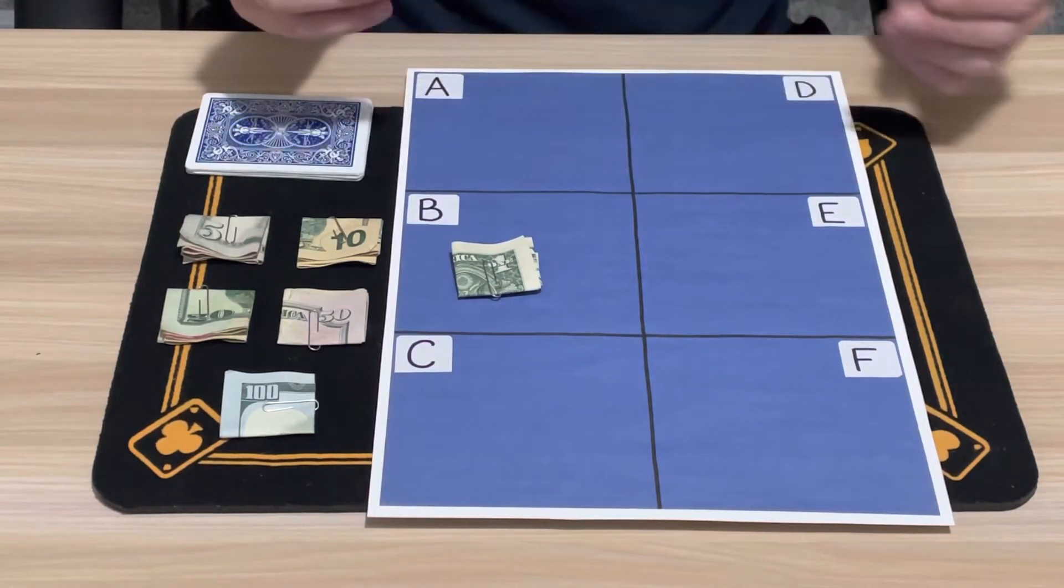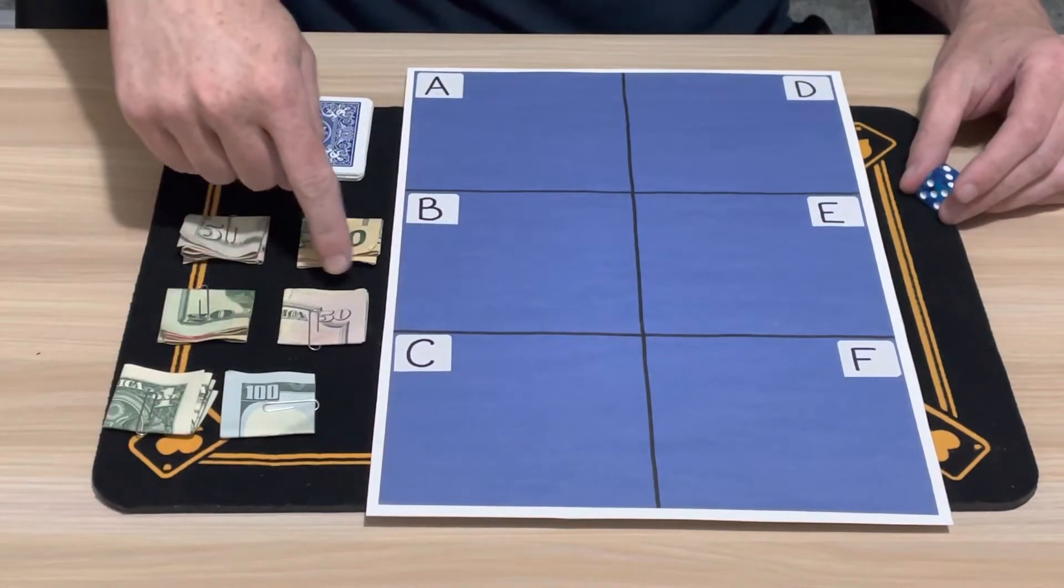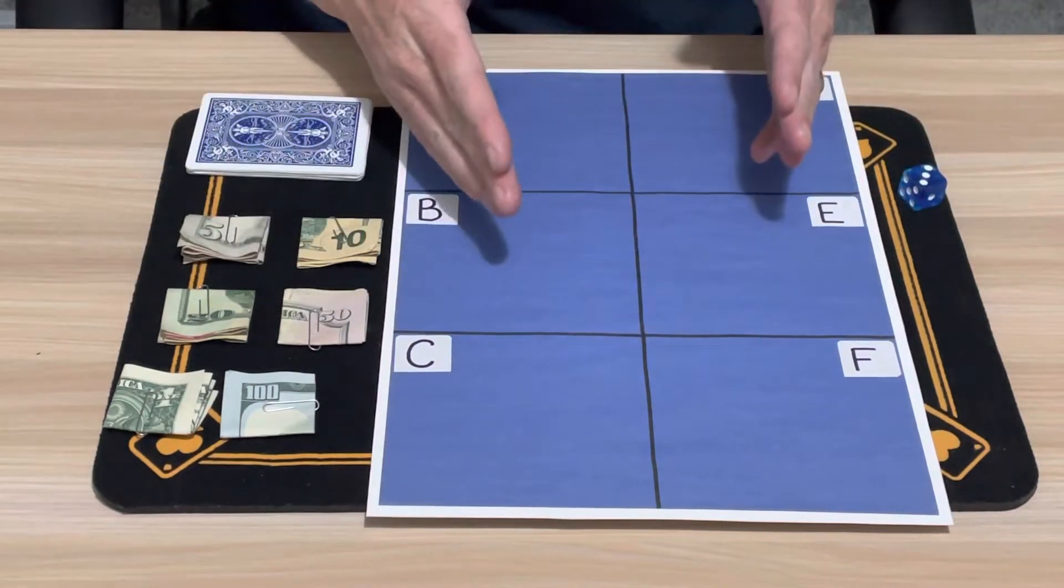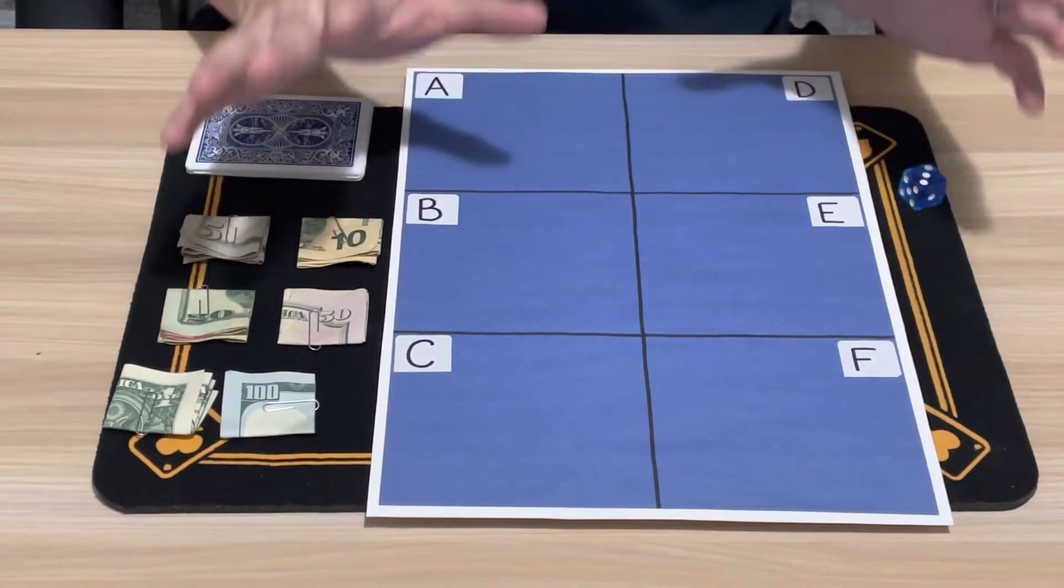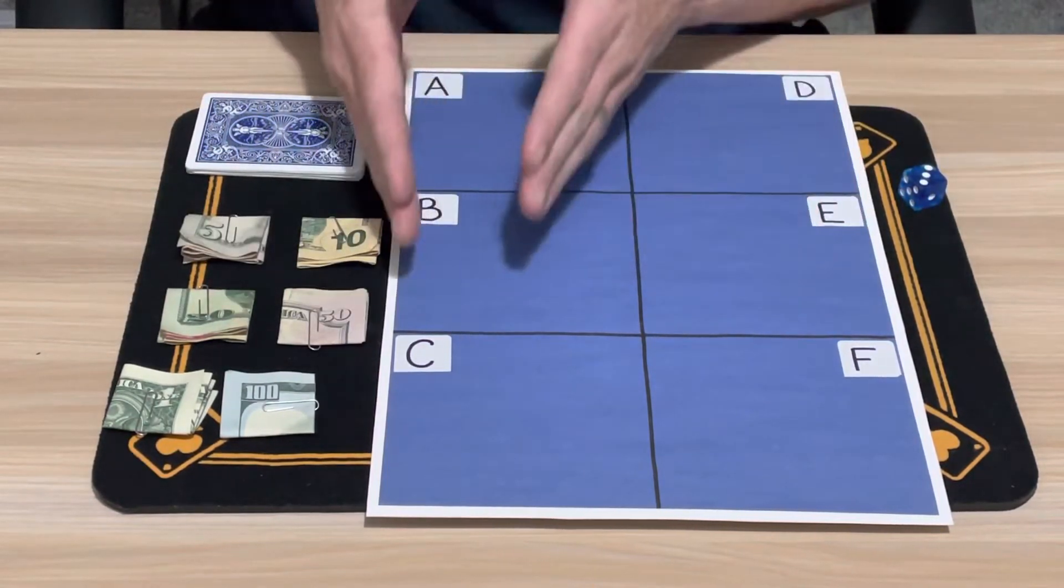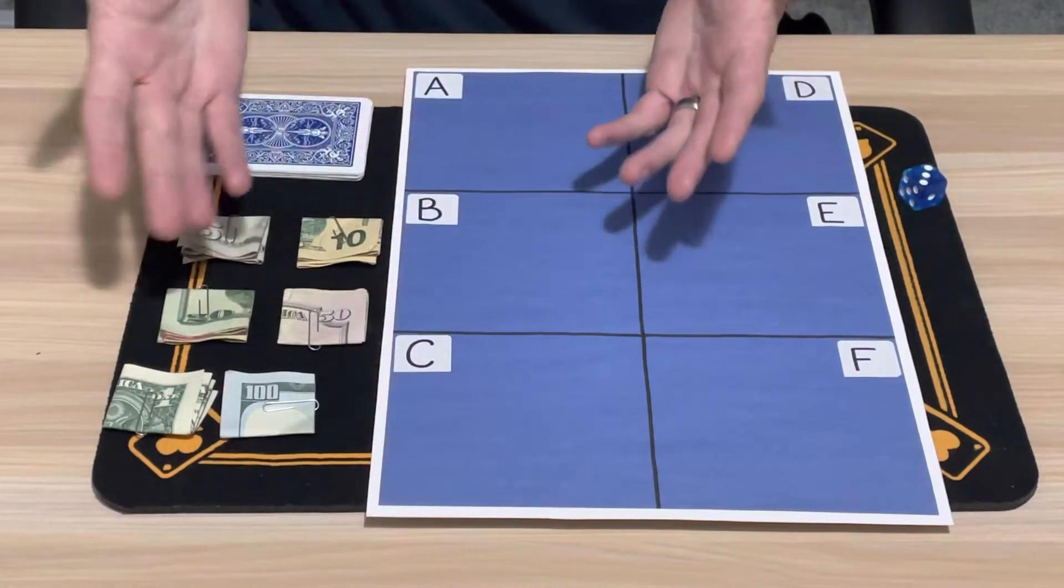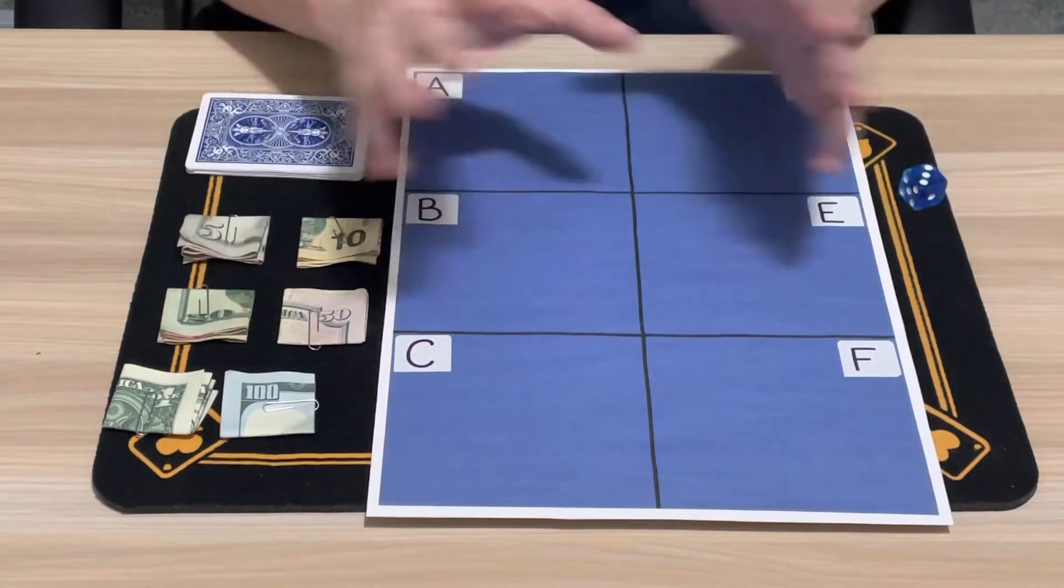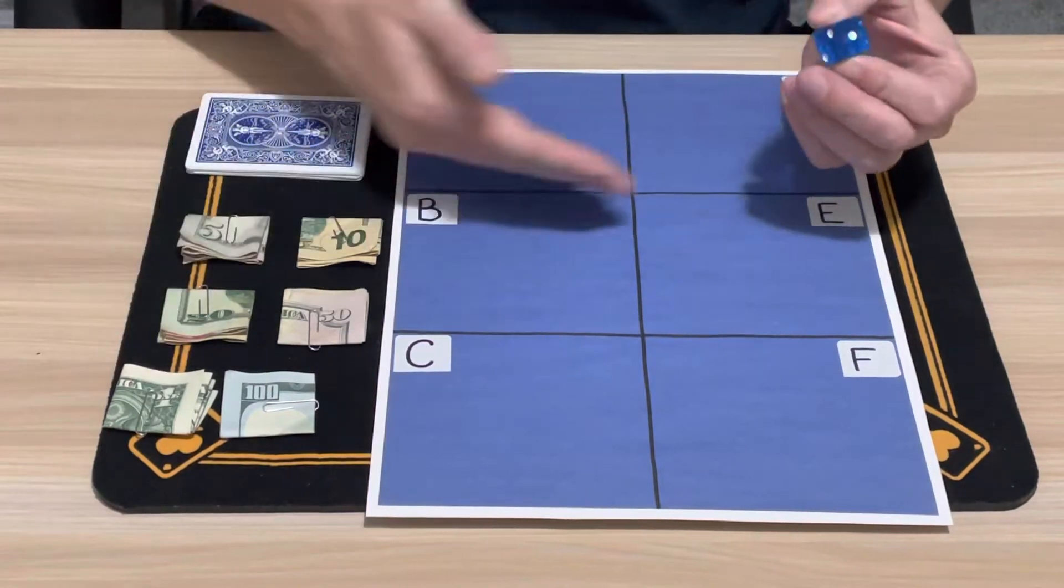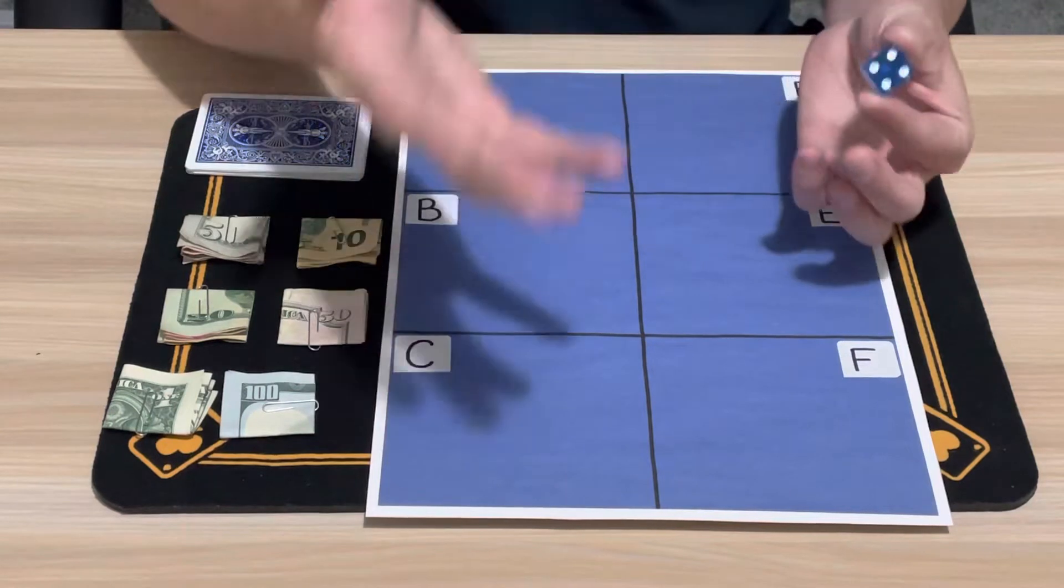So to start off with, I would have the spectator put these six bills on any six spaces they want, one bill per space. The spectator can do whatever they want here. There's no force, nothing like that. Any bill can go on any space. To prove that it is random, I'll use a dice to assign where the bills start off, but again, this would be unnecessary if you had a spectator.